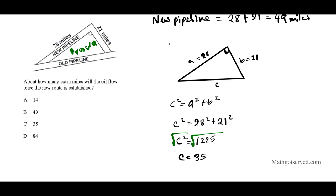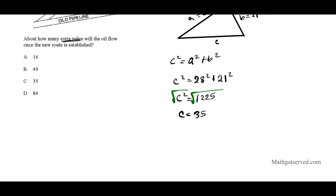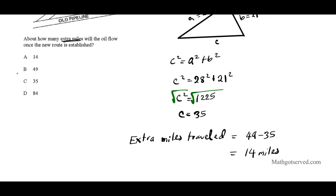The question asks how many extra miles the oil will flow on the new route. The extra miles is simply the difference: new minus old, which is 49 minus 35 equals 14 miles. The correct answer is option A.